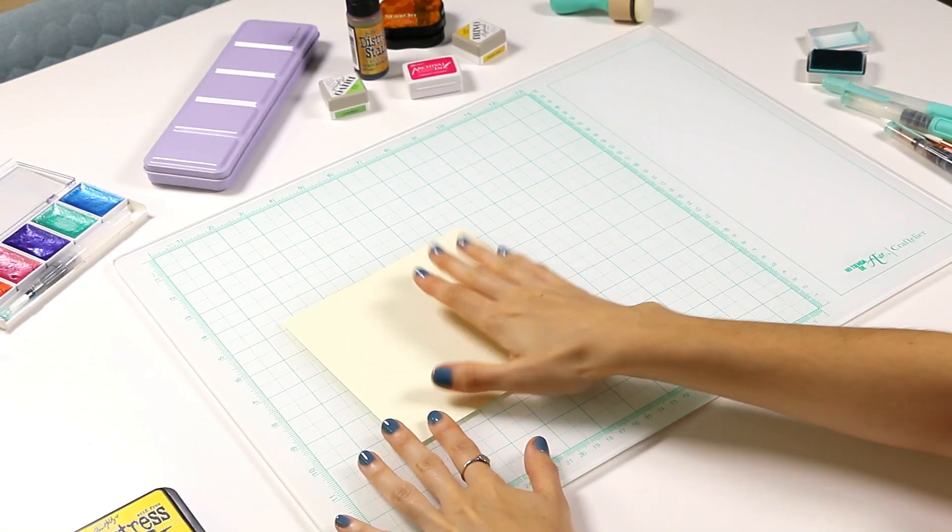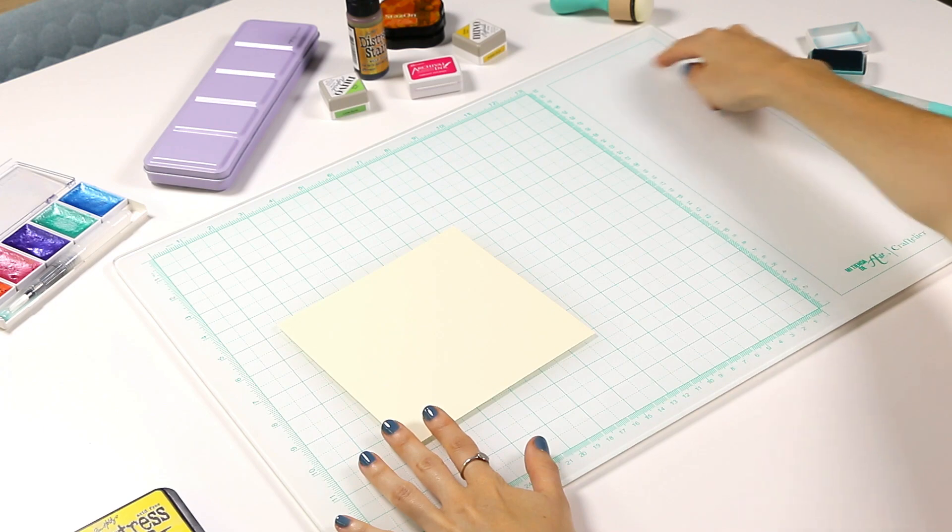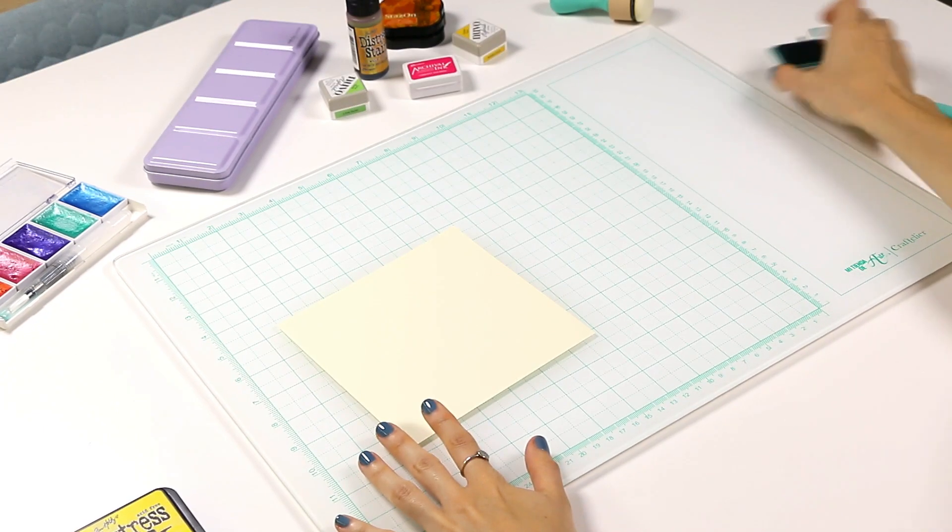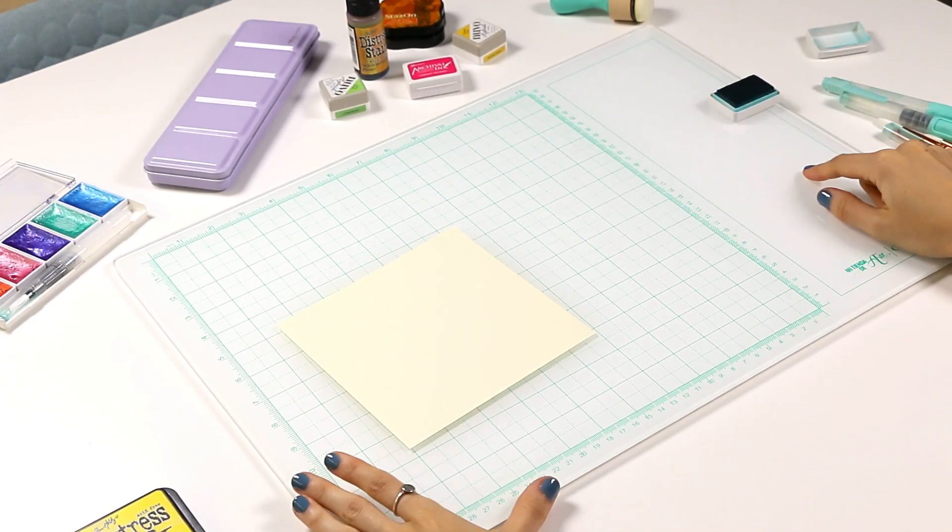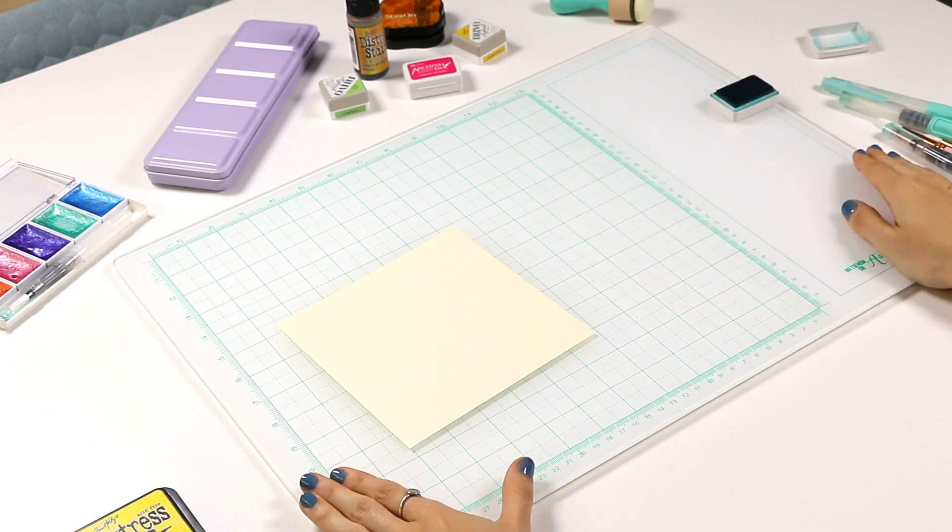So, as we were saying, this part of the mat is perfect to work with a project, while this other area is the mixing area, where you can pour your inks or watercolors.